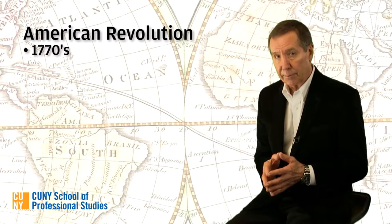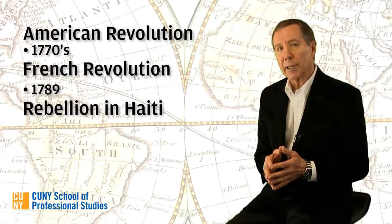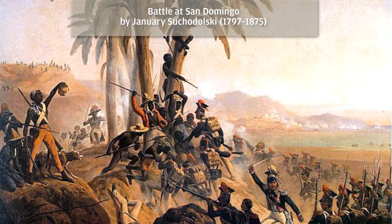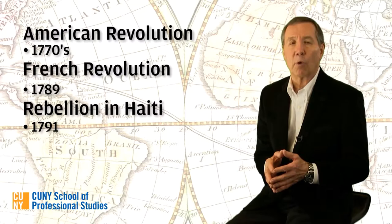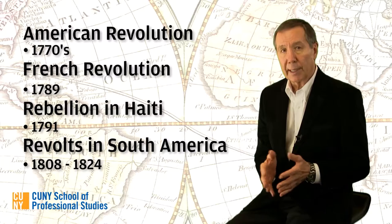We'll begin with the revolution in the English colonies of North America in the 1770s. Then we'll move to the French Revolution in 1789 and consider the effects of both revolutions on Europe in their wake. We'll also study a slave rebellion in the French colony of Haiti in 1791 that led to the establishment of the Republic of Haiti, the first independent black republic in the world. Finally, we'll learn about the political changes that swept through the Spanish colonies in the Americas between 1808 and 1824 that created the modern nations of Latin America.